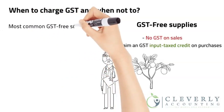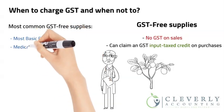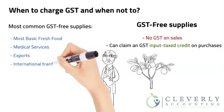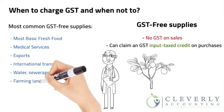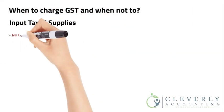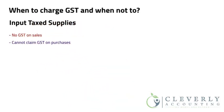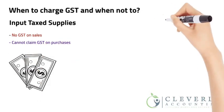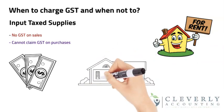The most common GST-free supplies are: most basic fresh food, some medical services, exports, international transport, water, sewerage and drainage, and farming land. Input tax supplies are not subject to GST, and no input tax credit can be claimed for anything acquired to produce these supplies. Input tax supplies mostly cover financial supplies, the supply of residential rent, and the supply of residential property that is not new.